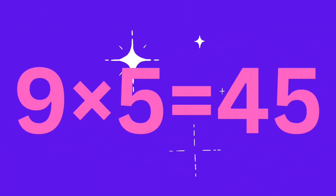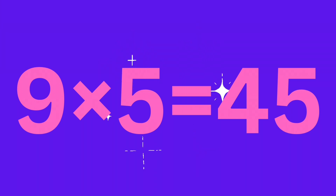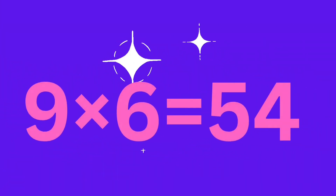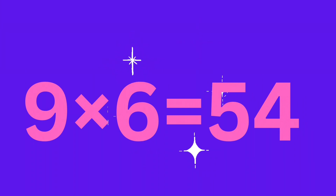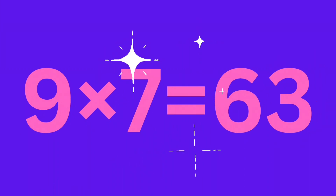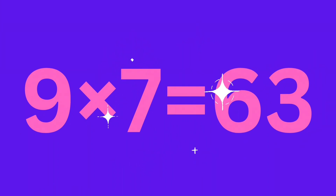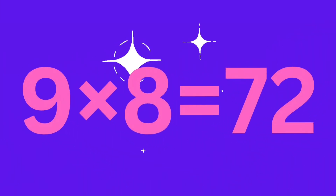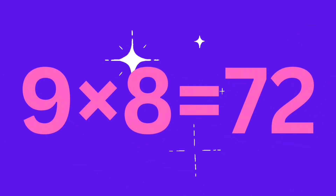9 fives are 45. 9 sixes are 54. 9 sevens are 63. 9 eights are 72.